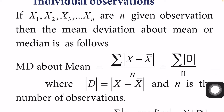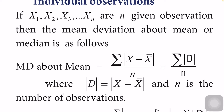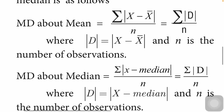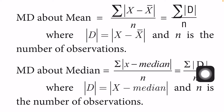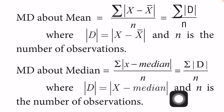Modulus D indicates the positive value. If we give a negative number, the modulus will convert it into positive — it is like a box. If you give a positive value, you get positive; if you give a negative value, you also get positive. Mean deviation about median is sigma modulus (x minus median) divided by n, equal to sigma modulus D divided by n, where n is the number of observations.